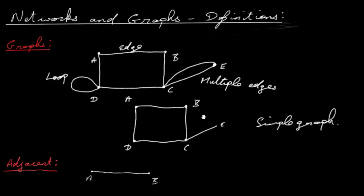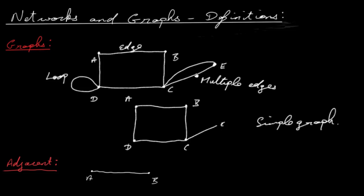We can have what are called multiple edges. In this particular case we've got vertices C and E which are joined by two edges — so this is what we would call multiple edges. And over here we've got a loop, where one node or vertex is joined by one edge back to itself again. That's called a loop.